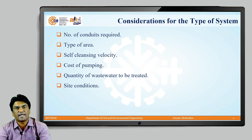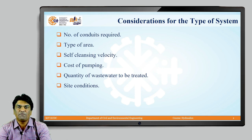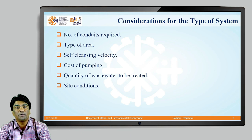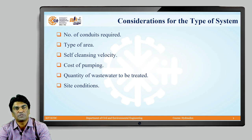The second consideration is the type of area which is required to be served — that is also an important factor in deciding the type of system. The third consideration is self-cleansing velocity. We are supposed to maintain a minimum possible velocity of flow in the sewer line so that there will not be any silting problem or deposition at any section. This minimum velocity is known as self-cleansing velocity and is important in identifying the type of system.